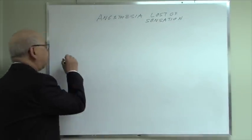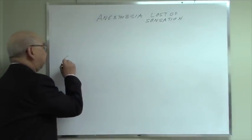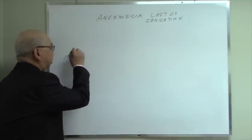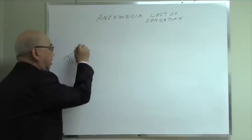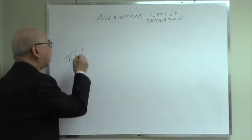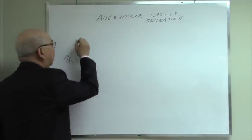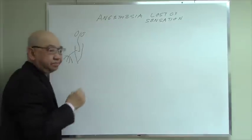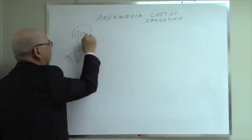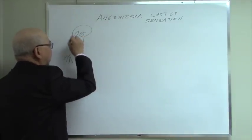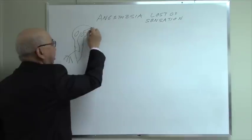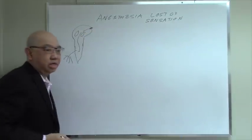Sensation — for example, you've got fingers that release sensation, and then it goes to your nerve, goes into the spinal cord, goes up to the thalamus, and the thalamus interprets the sensation.